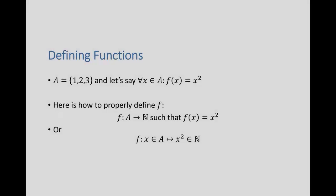When defining a function, a function must be defined from a set and give elements in another set. For example, if set A is {1, 2, 3} and we have a function that squares each element, we say F is defined on A and gives natural numbers such that F(x) = x². Or equivalently, F maps x — an element of A — to x², an element of the natural numbers. Notice the difference between the two arrows: one arrow defines functions from sets to sets, and the other maps elements from one set to elements of another.